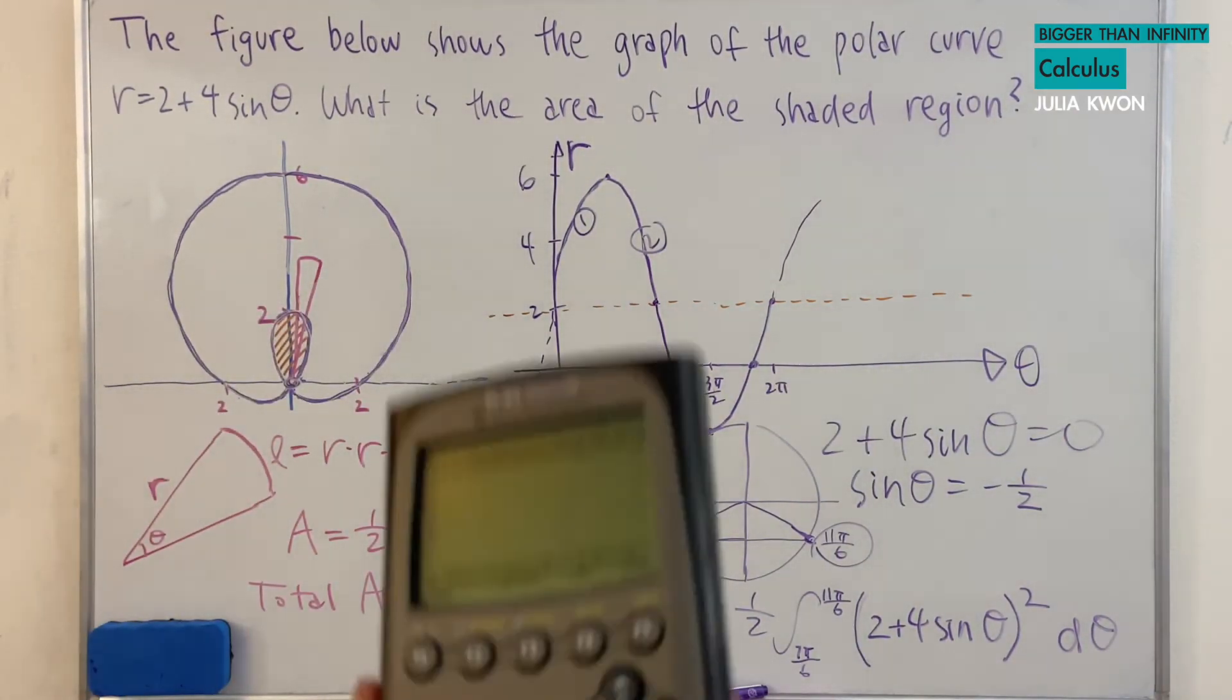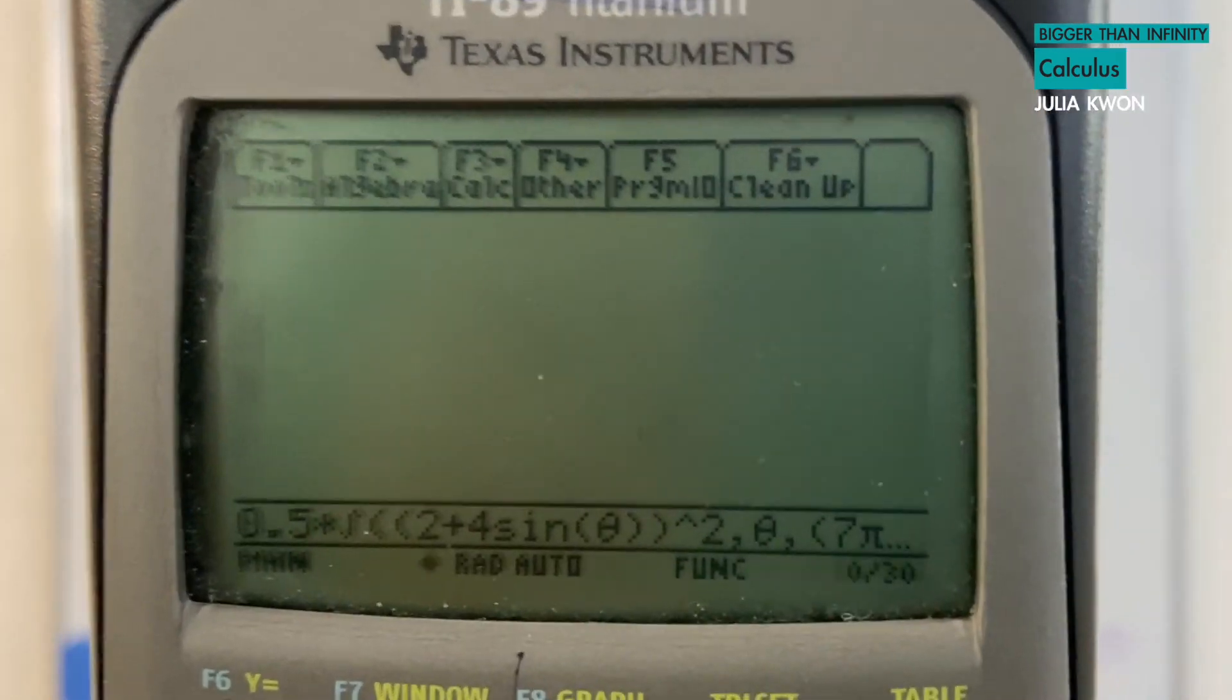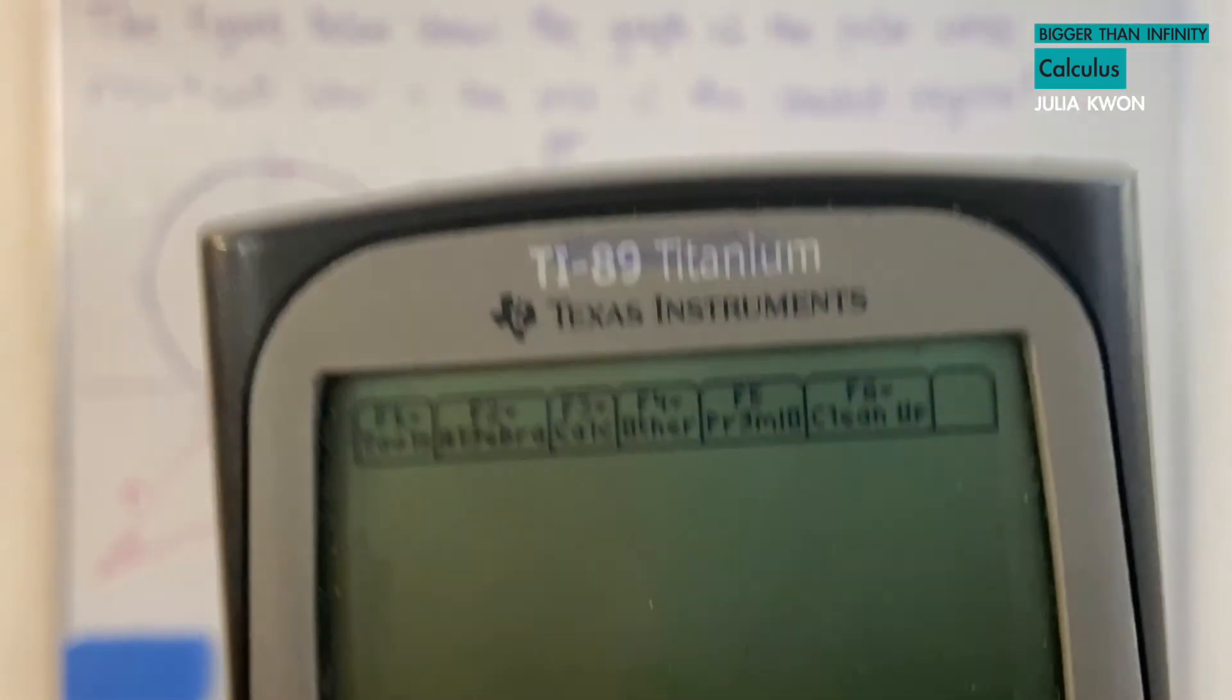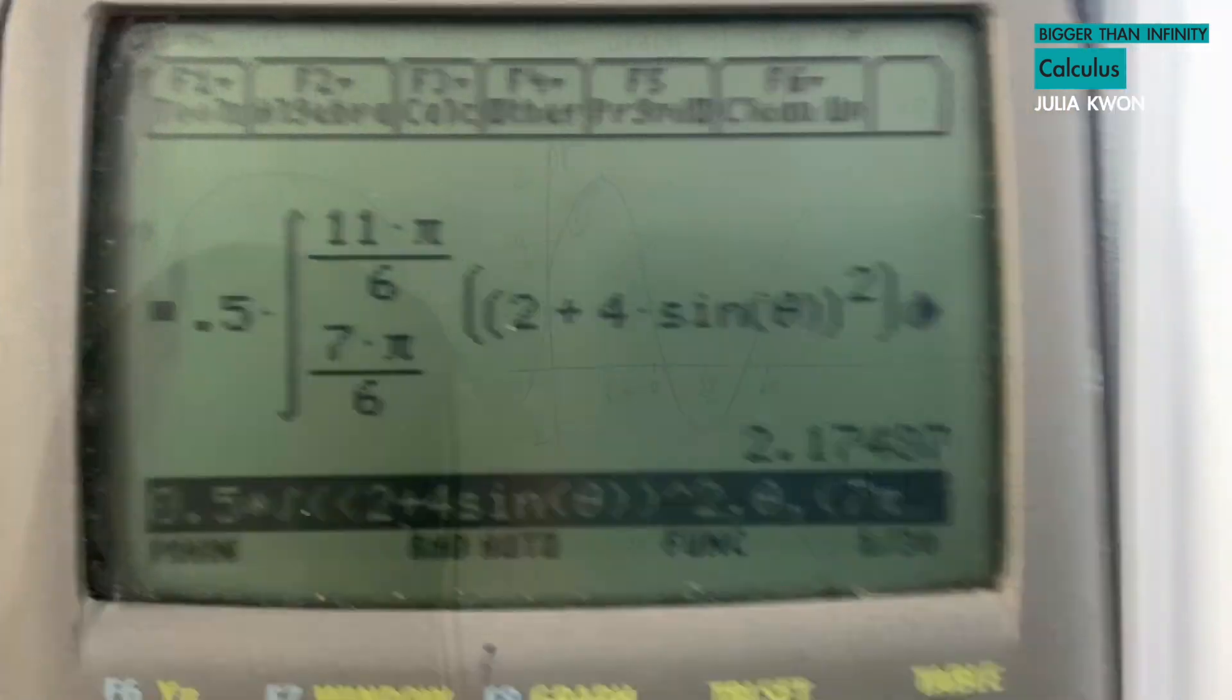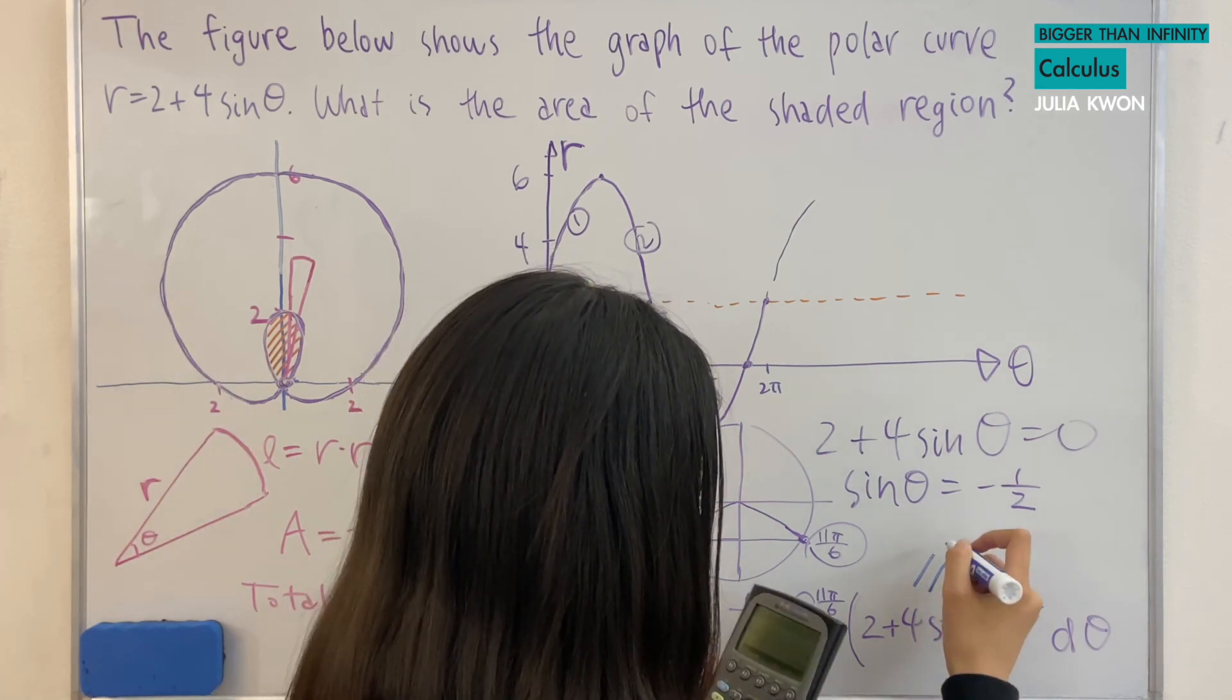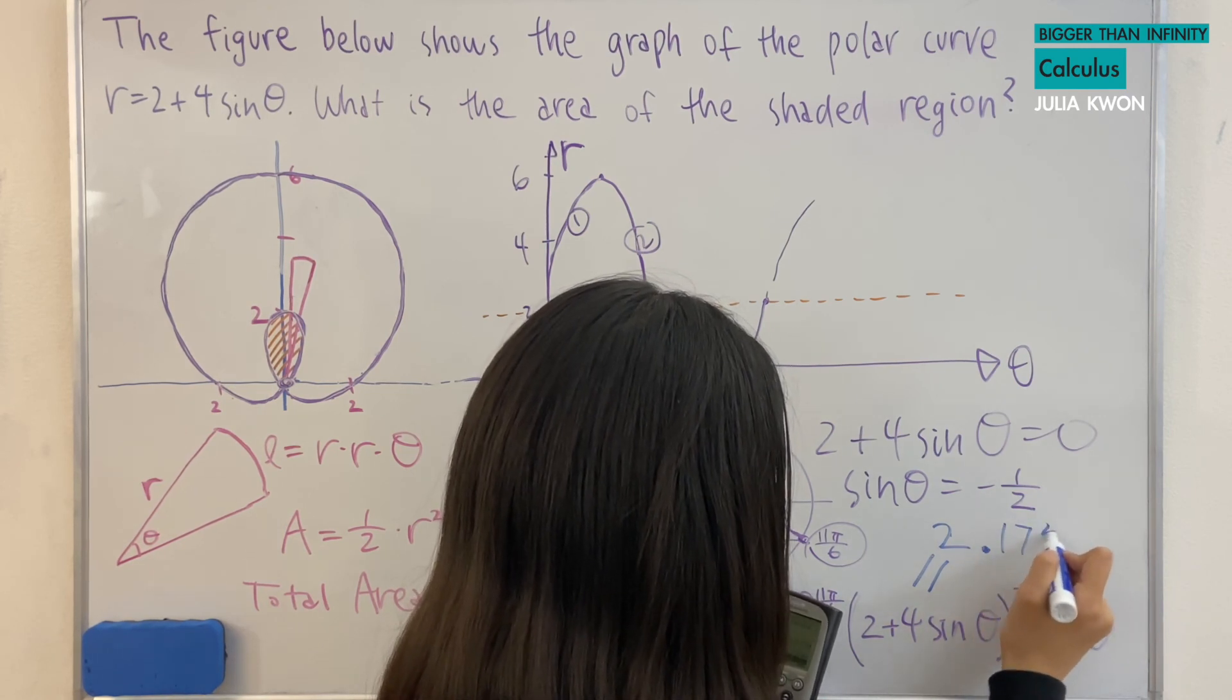Okay, so I have the equation written down right here. And so if I calculate this integral, I would get 2.174. That would be our approximate answer.